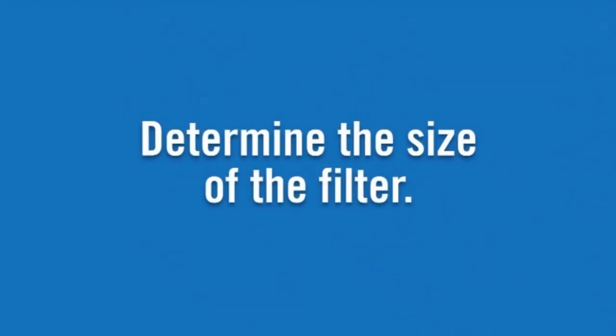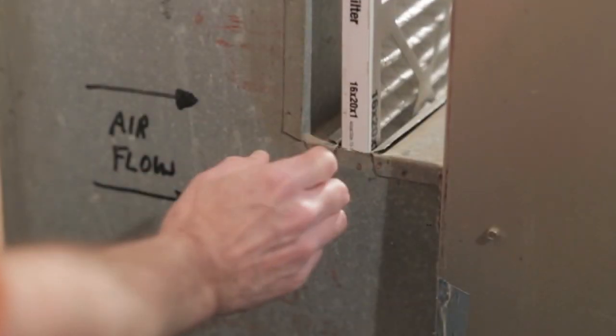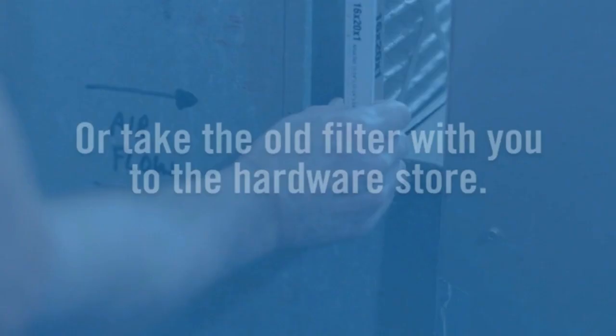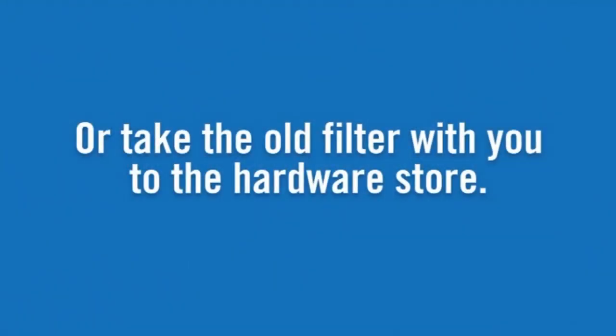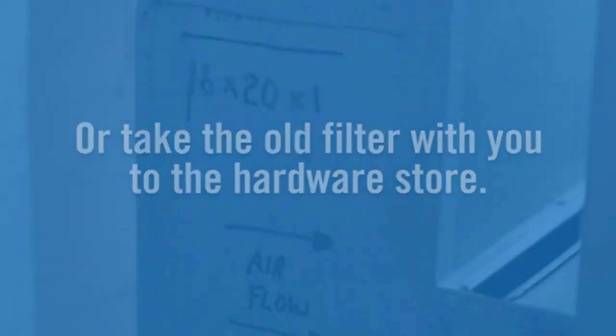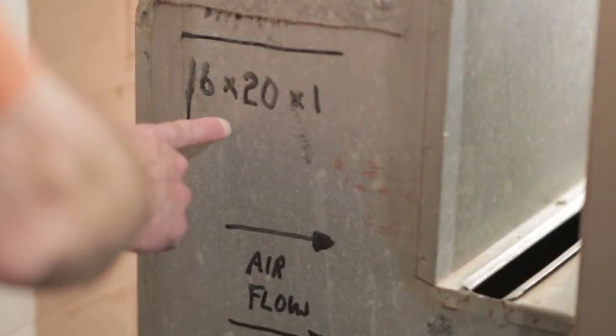To replace your old filter with a new one, you'll need to determine the size. To do this, check your current filter. The size should be marked on the side, or you can just take the old filter with you to any hardware store or home center. Again, it's not a bad idea to use your marker to write the filter size directly on your furnace.